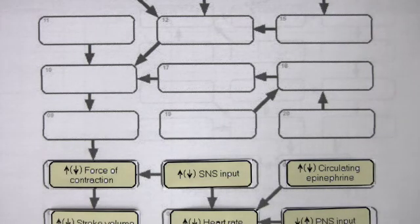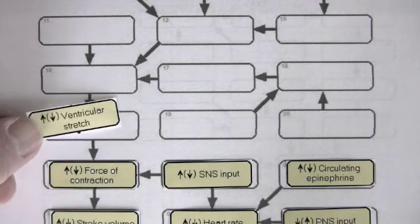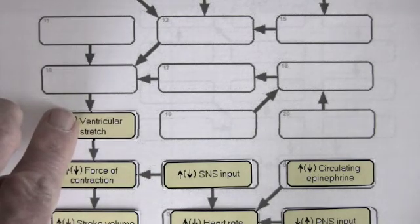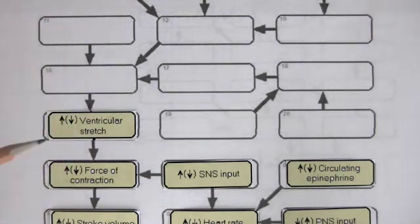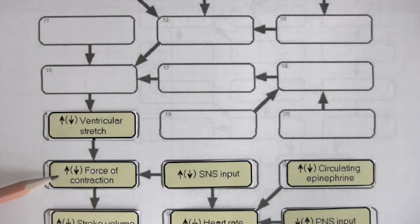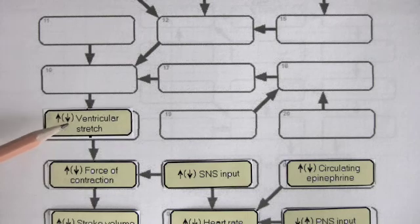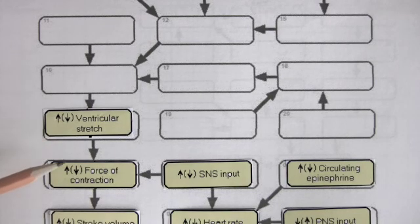As we saw with Starling's Law, force of contraction is determined by ventricular stretch. So an increase in ventricular stretch increases force of contraction. Conversely, if ventricular stretch decreases, force of contraction decreases.